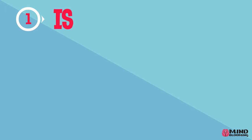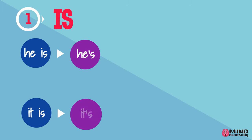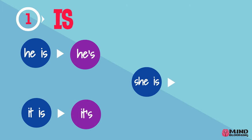There are many, many more contractions in the English language. Let's take the word is for example. If I want to combine the words he is, all I have to do is drop the I and add an apostrophe. So it will be he's. It is will be it's. She is will be she's.